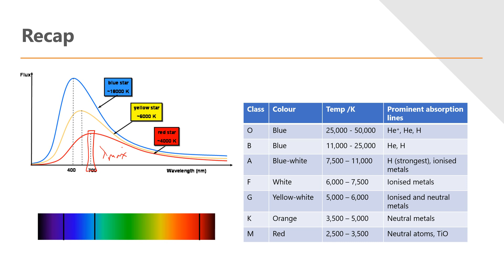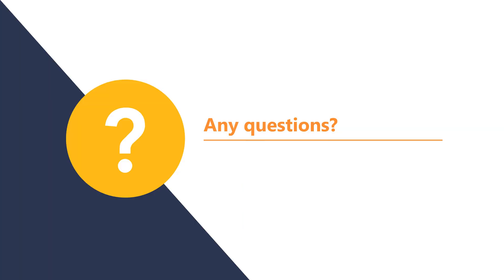You're expected to be able to remember that table, basically all of the different parts of the classifications. And you're expected to be able to describe and allocate the hydrogen Balmer absorption lines to the top three classifications of stars. All right folks, if you've got any questions please email me or get in touch on Teams.